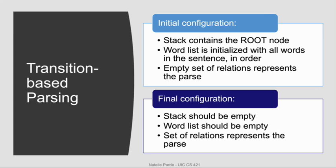An initial configuration in a transition-based parser will have the stack containing only the root node — the node that represents the root of the sentence — an input buffer with all of the words from the sentence listed in order, and then an empty set of relations indicating that no parsing has been completed yet. The final goal configuration will have an empty stack, an empty word list, and a set of relations representing the parse.